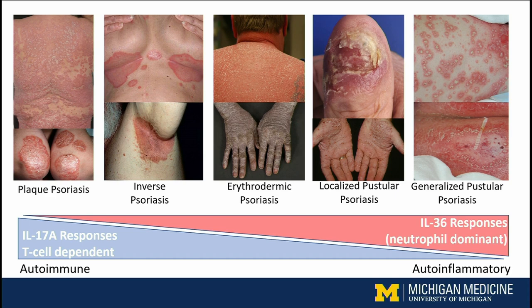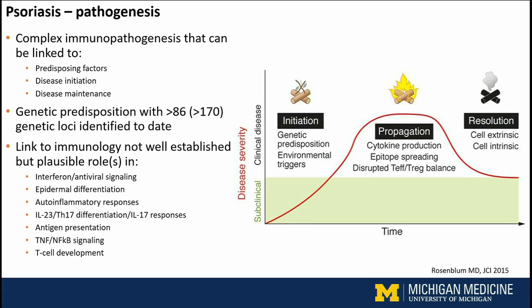My talk on the genetics of psoriasis is mostly focused on plaque psoriasis. That's where we know most about the genetic predisposition to psoriasis and the biological mechanisms involved. If you think about what's driving psoriasis, it has a very complex immunopathogenesis that can be linked to predisposing factors and mechanisms involved in disease initiation and disease maintenance.